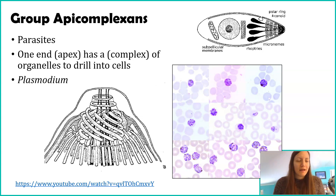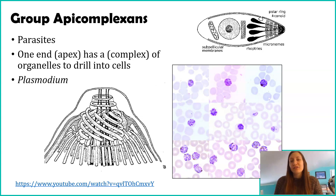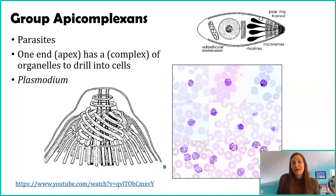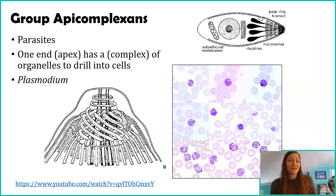An example of an apicomplexan is Plasmodium — italicized because it's a genus name with quite a few species, but all doing similar things. Plasmodium is actually what causes malaria. Mosquitoes carry that plasmodium parasite in the blood they've taken, and when that mosquito lands on another human and drinks from them, there is some blood mixing that passes the plasmodium parasite to you. That parasite then attacks your red blood cells, literally drilling through them to get inside, taking advantage of the oxygen and iron in them, using it for reproduction, and continuing the infection.